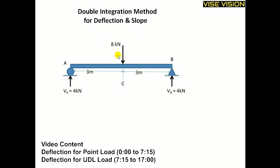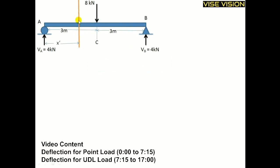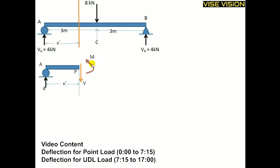In this video I will explain how to find the deflection and slope using the double integration method when a concentrated load is acting over the beam. I will cut the beam from here and make the moment equation. Taking this distance as X, the shear force acts downward and the moment acts counterclockwise. If you take the left side by cutting from here, take the terms as they are; if you take the right side, take the opposite directions.